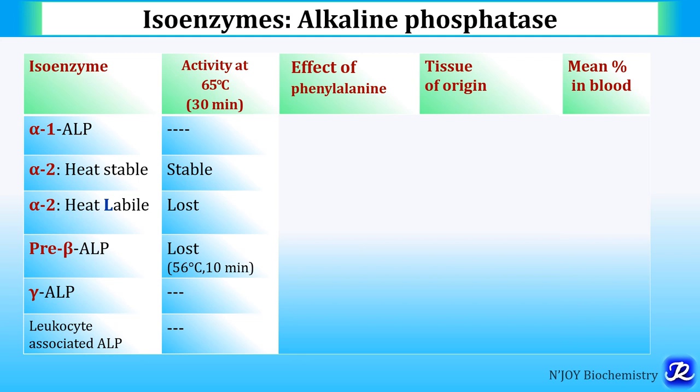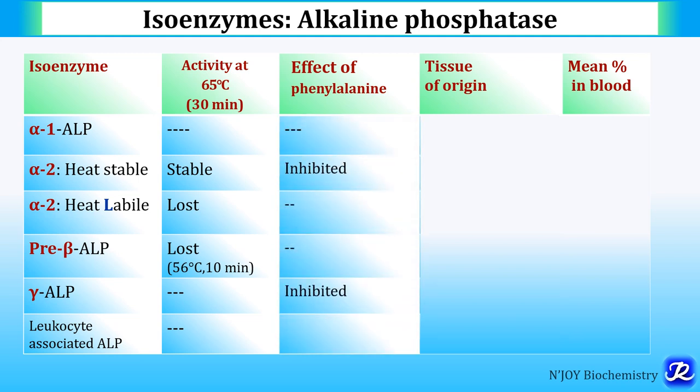Regarding activity at 65°C for 30 minutes: Alpha-2 heat stable retains activity, while Alpha-2 heat labile loses activity at 65°C for 30 minutes. Pre-beta activity is lost at 56°C for 10 minutes. Regarding the effect of phenylalanine: Alpha-2 heat stable is inhibited by phenylalanine, and gamma alkaline phosphatase is also inhibited by phenylalanine.